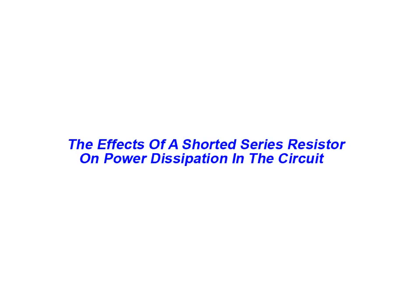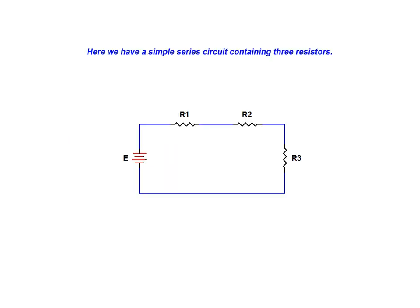In this animation we will be examining the effects of a shorted series resistor on power dissipation in the circuit. Here we have a simple series circuit containing three resistors and a constant DC voltage source.